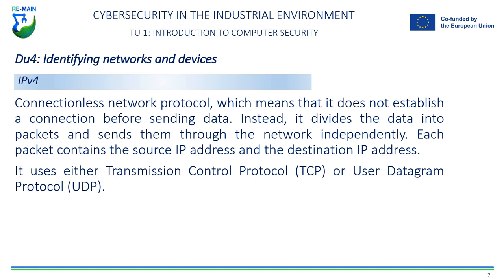IPv4 is the fourth version of the internet protocol and is the most widely used network protocol in the world. It is the set of rules that govern how devices communicate over the internet. IPv4 uses 32-bit addresses and is capable of supporting approximately 4.3 billion unique IP addresses. However, due to the increasing number of devices connected to the internet, this number of addresses is not enough to meet today's needs. This is why IPv6 has been developed, which uses 128-bit addresses and supports a much larger number of IP addresses.